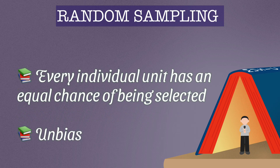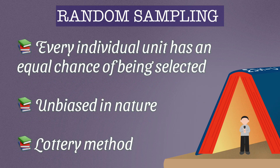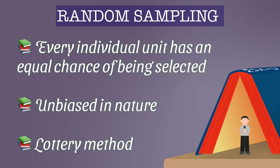In random sampling, every individual unit has an equal chance of being selected. In other words, random sampling is unbiased in nature. This is why it is also called the lottery method.